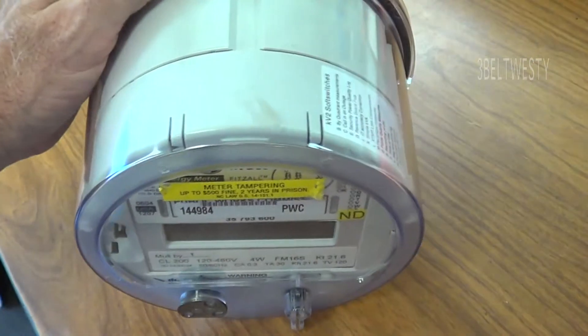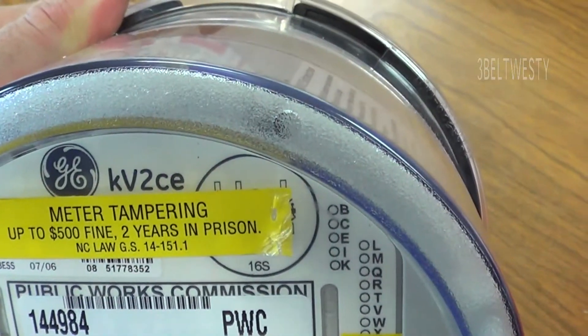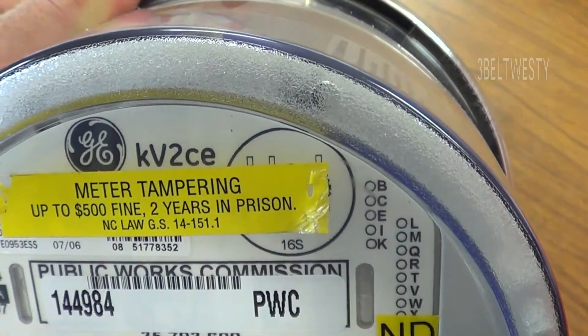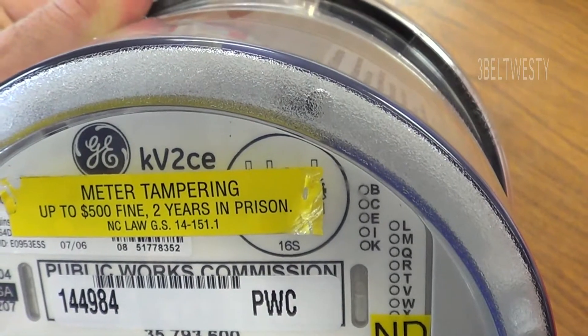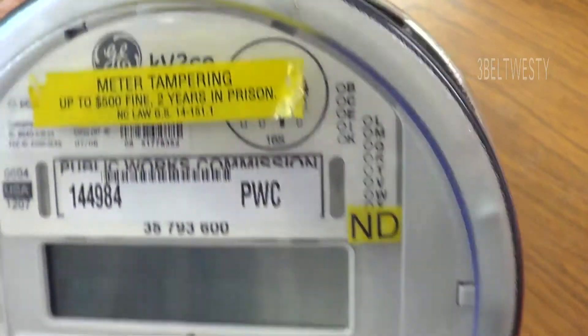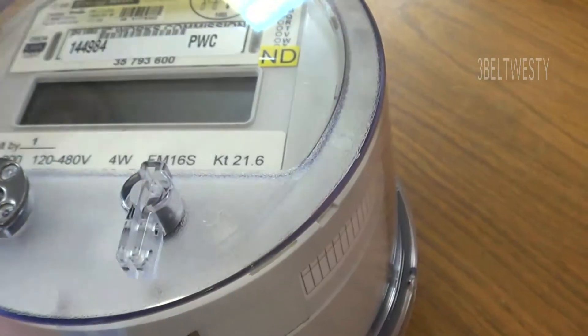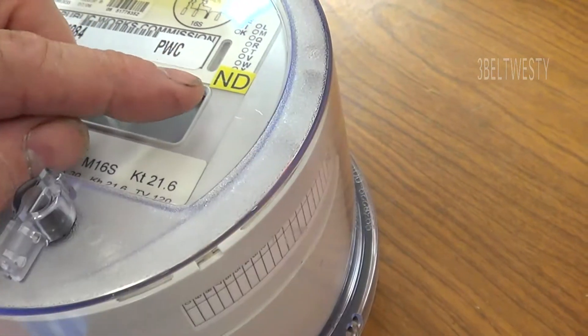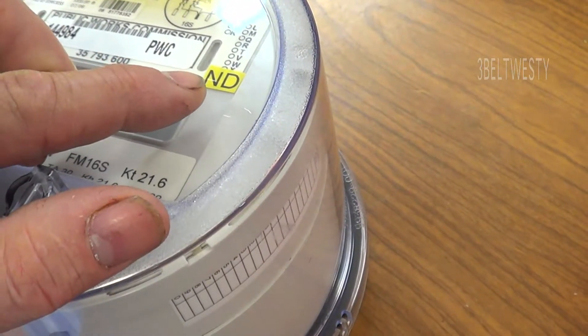Now what's interesting about this, this is a GE fits all KV2CE and the E on there has no demand feature and the electric company here is put on here ND for no demand.